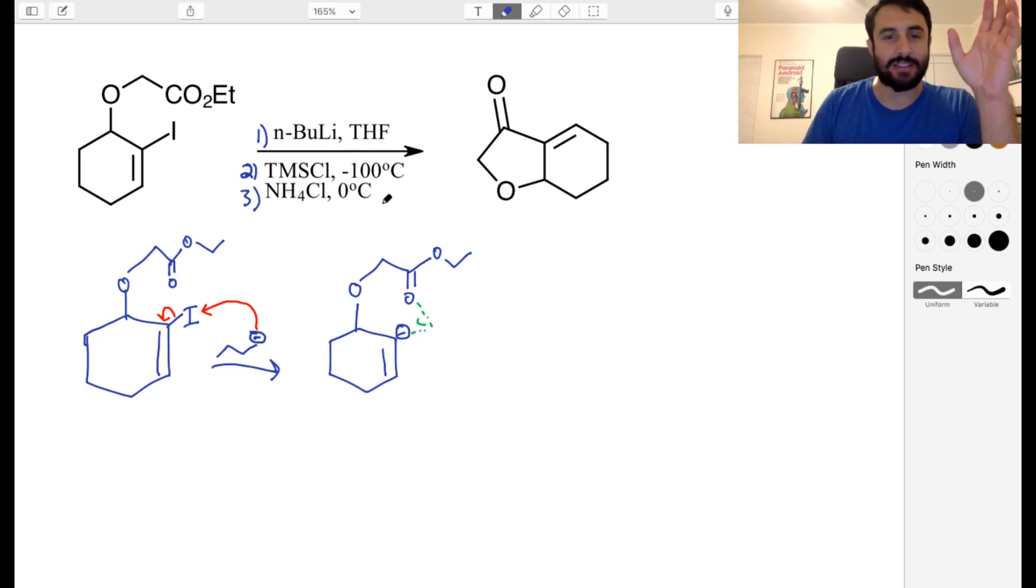Okay, so now we've got TMSCl. Now what is TMSCl? That is trimethylsilyl chloride. So we've got silicon, we've got three methyls, and then we've got chlorine.